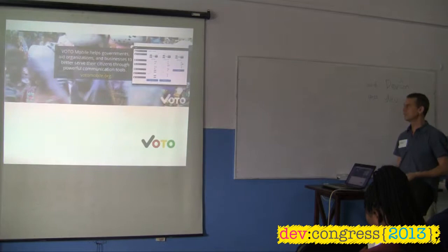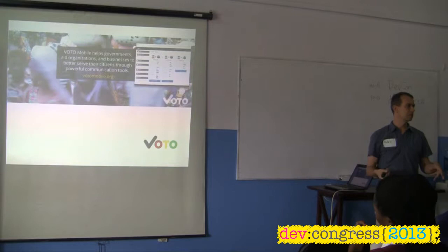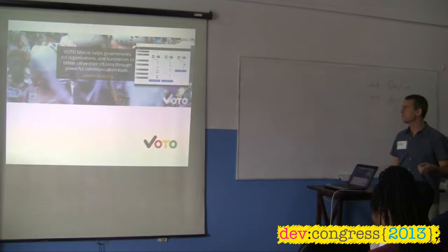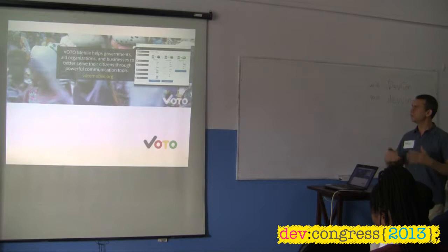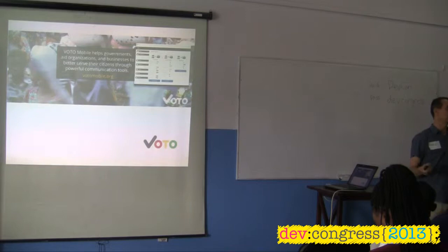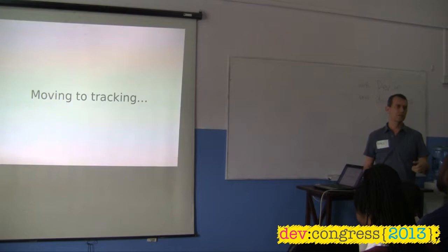Here in Ghana there's Voto Mobile — they're packaging and sending out voice messages for civic awareness and also looking at agriculture. You can just program it and send out voice messages, and in fact ESOCO is using Voto Mobile to send out voice messages to farmers. What you're also seeing in agriculture is a move to tracking — understanding problems like Europe has had in tracing horse meat in burgers. Tracing where food comes from and understanding its source is a requirement for exporting food, not a luxury.